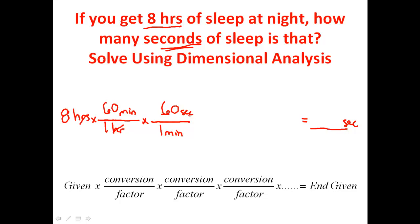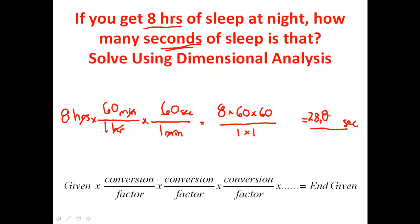The next conversion factor: in one minute there are 60 seconds. Now seconds on top matches seconds as the ending unit, so I stop the problem. Solve the math: 8 times 60 times 60 on top, divided by 1 times 1 on the bottom. Eight times 60 times 60 gives 28,800 seconds. A good night of sleep equals 28,800 seconds.